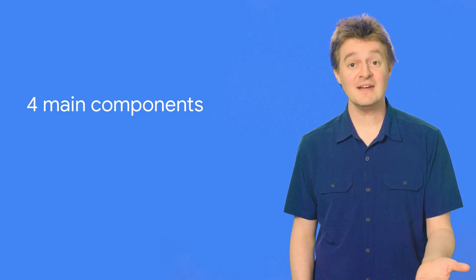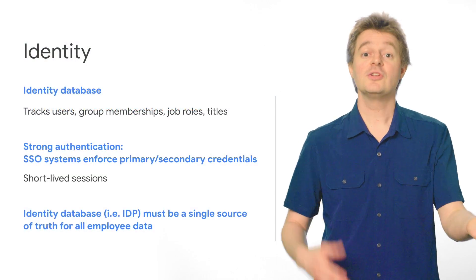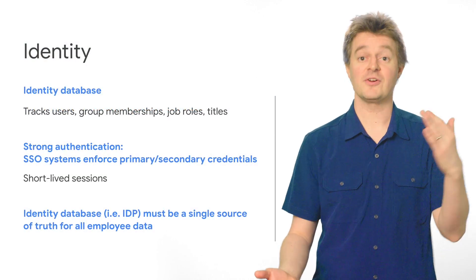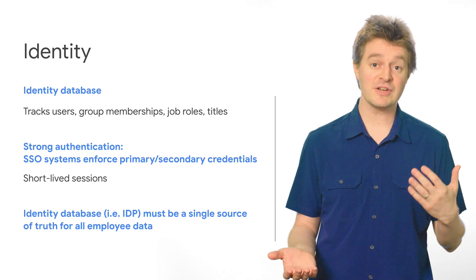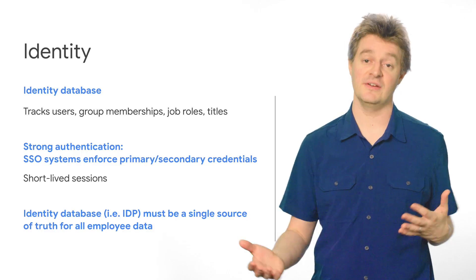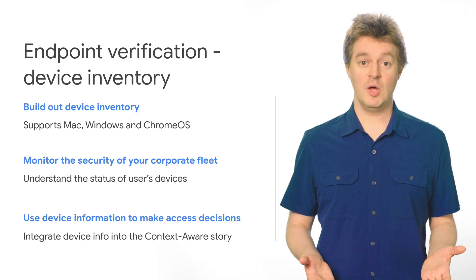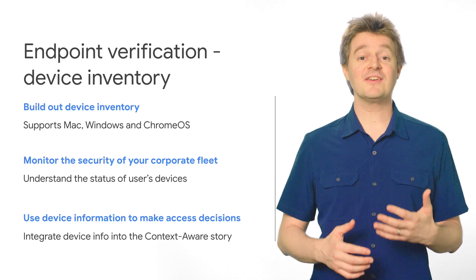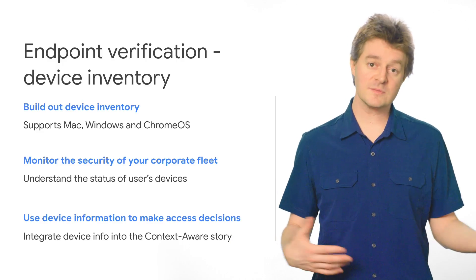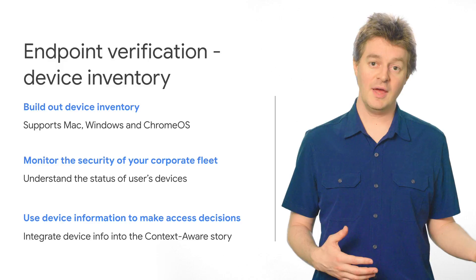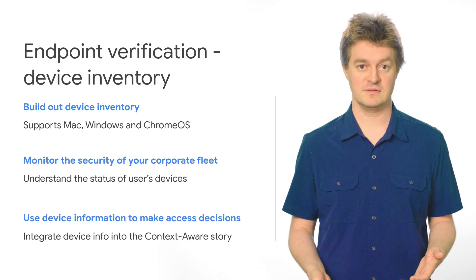First, the identity tools, which let you do things like keep a database of users, their job roles, and their access levels, along with the ability to have secondary credentials and short-lived sessions. Next, endpoint verification, which boils down to having a database of your devices, understanding what operating systems are supported, and what device information can be used to make access decisions.